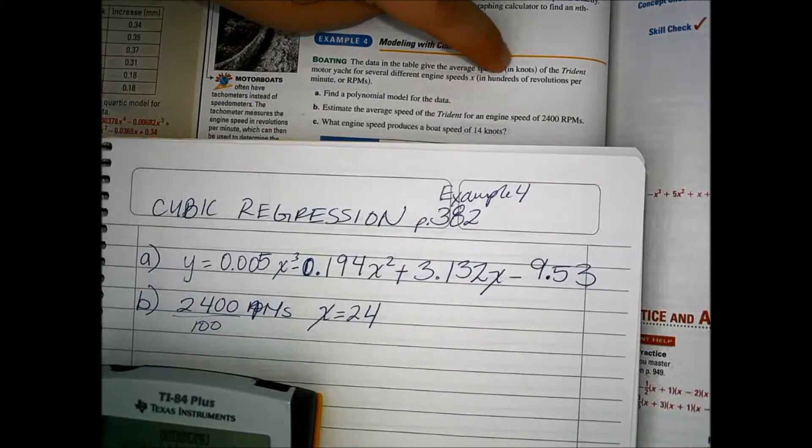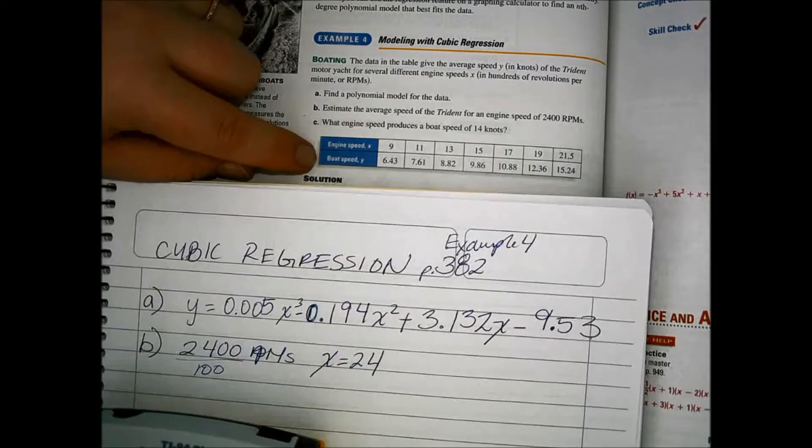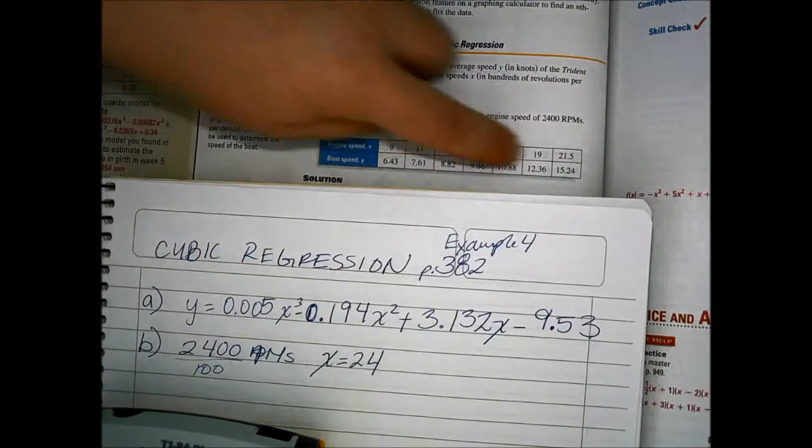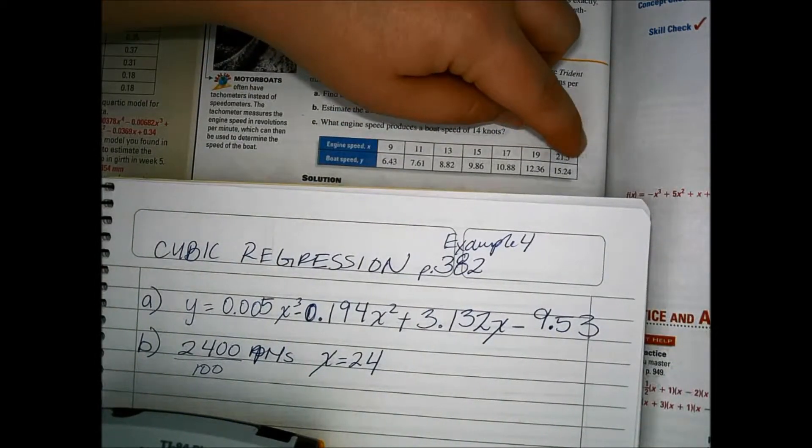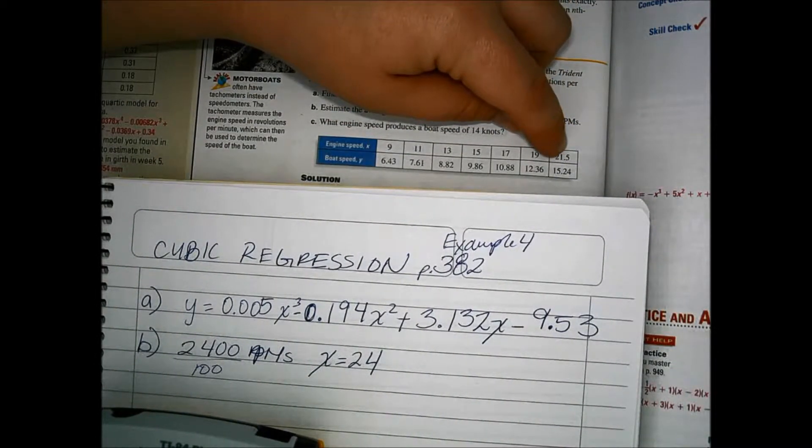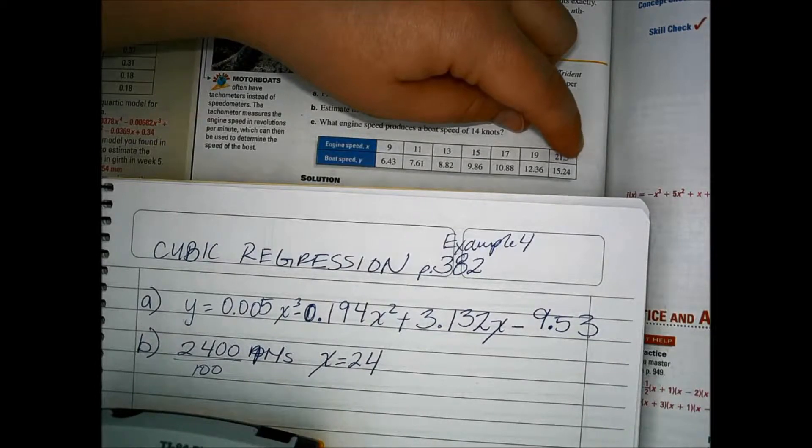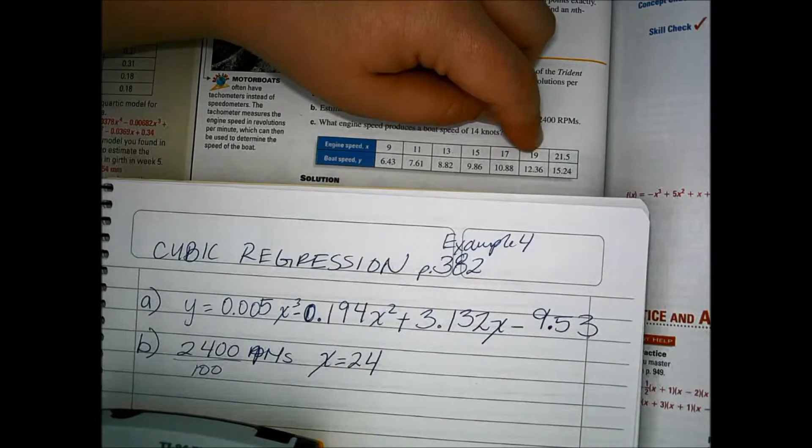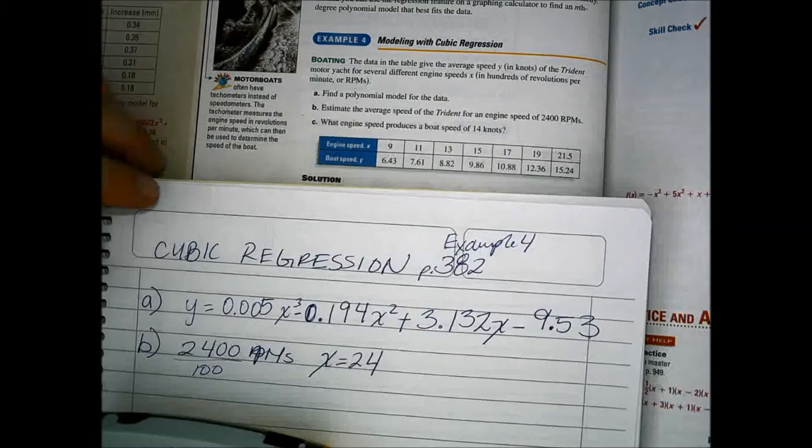Because we would have to divide by 100 since the speeds, the engine speeds are in hundreds on the data table. So these are all in hundreds. So 21.5 is actually 2,150. 19 is actually 1,900. You get the idea.